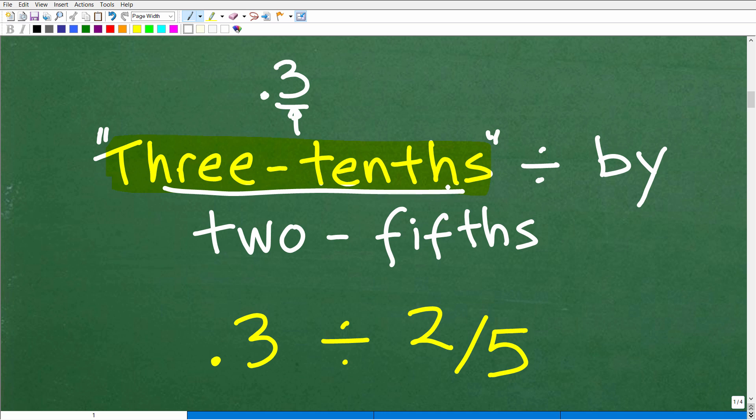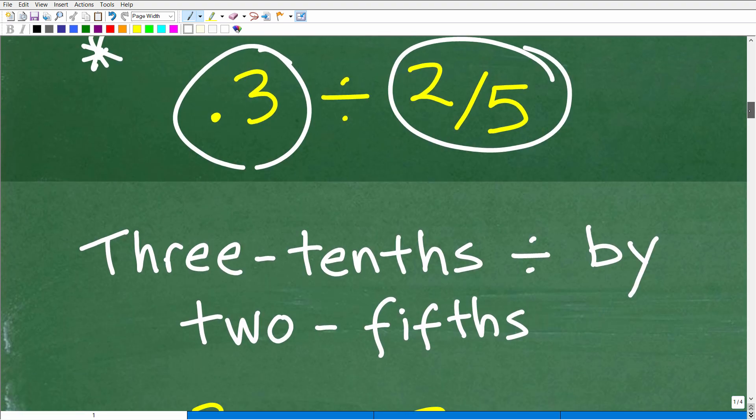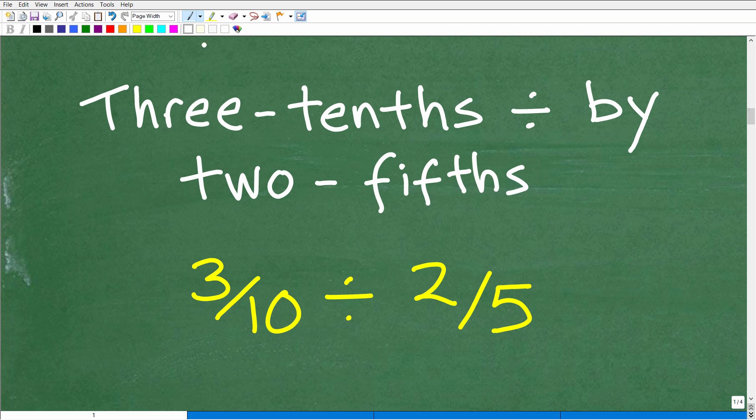Now you can write that as a fraction. I'll show you that in a second. And that's going to be divided by 2 fifths, okay? So 2 fifths you can write as a fraction 2 over 5. So we could think of this problem as 0.3 divided by 2 fifths or 3 tenths divided by 2 fifths. But again, if we're not using our calculator, we really want to work all in either all decimals or all fractions, okay? Now this approach right here, I don't think is the easiest approach, okay? Let me go ahead and show you what I think is the better approach to do this problem.